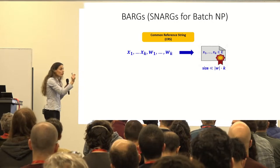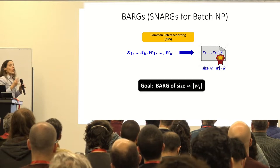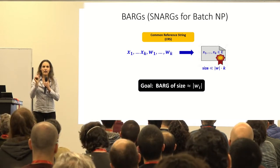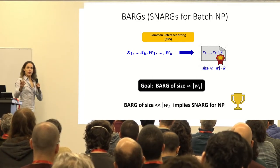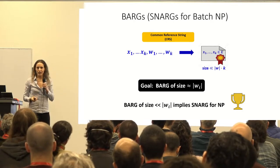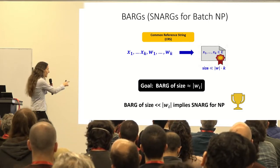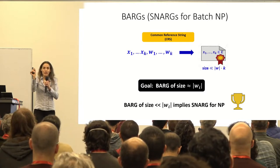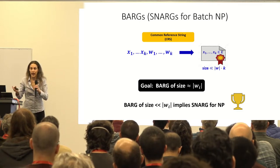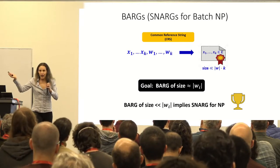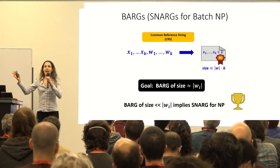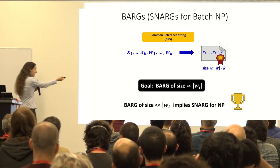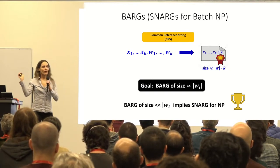The goal of a BARG is to get succinctness down to the length of one witness — that's K statements for the price of one witness. We could ask for even smaller (polylog), but that would imply a SNARG for NP, which is the holy grail we haven't achieved yet. So BARGs are an intermediate goal: if we get this, we get SNARGs for deterministic time, for RAM, and much more.